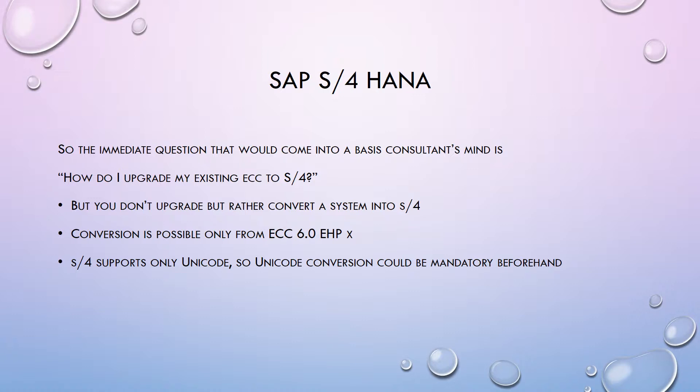If you are running an ECC 5 system currently, you first need to upgrade to ECC 6 — any EHP, though EHP 7 is recommended — and then convert the system into S4. One very important thing: S4 supports only Unicode, so if your source system is non-Unicode, conversion to Unicode is mandatory before the S4 conversion.